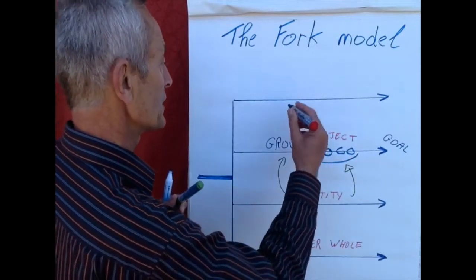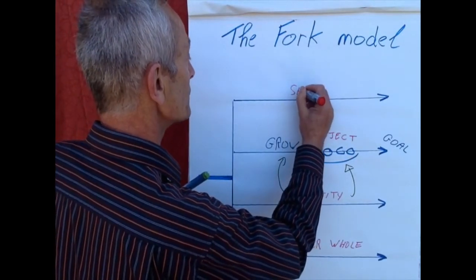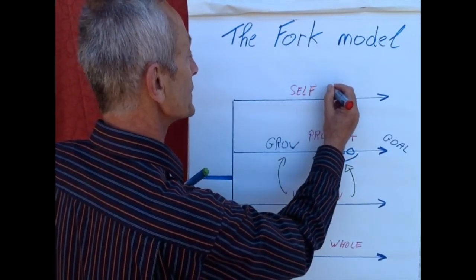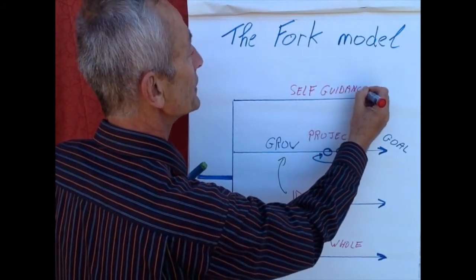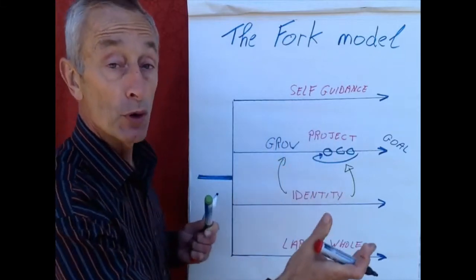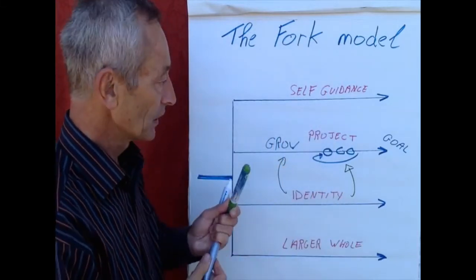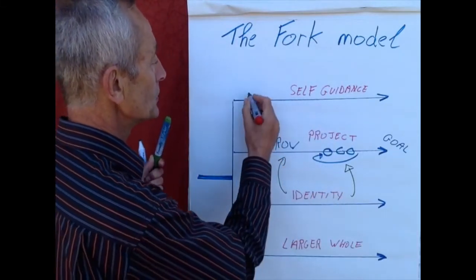The last, fourth track of my fork model - it looks like a fork of course - is self-guidance. Self-guidance is the ability to make progress in your life, the ability to take action.